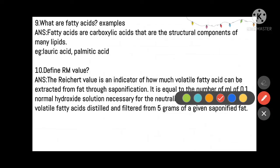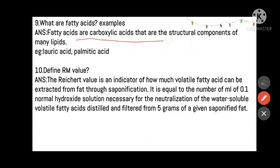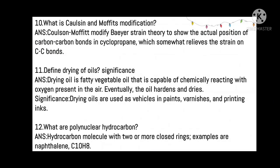What are fatty acids? Fatty acids are carboxylic acids that are structural components of many lipids — examples include lauric acid and palmitic acid. What is RM value? The Reichert-Meissl (RM) value is an indicator of how much volatile fatty acid can be extracted from fat through saponification — it indicates the quantity of fat that can be extracted.